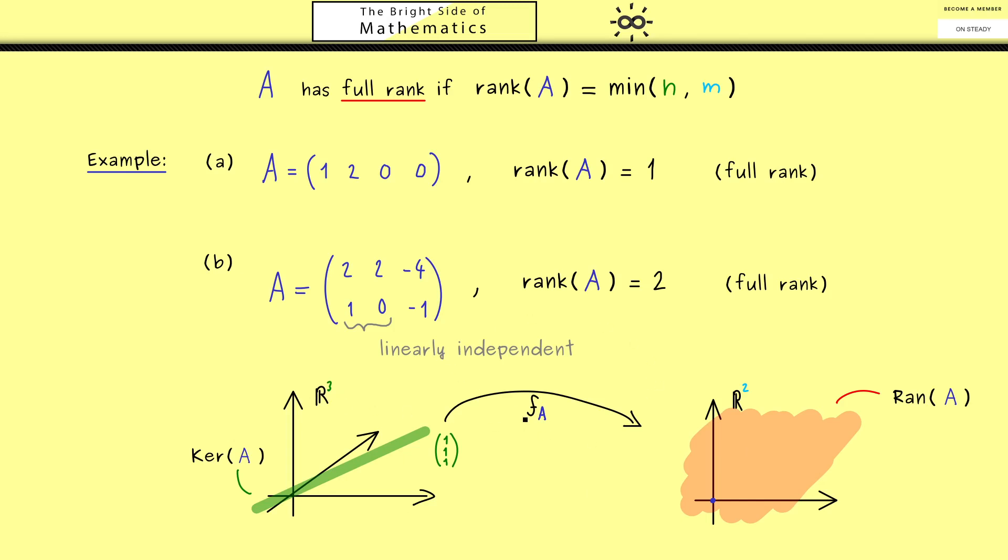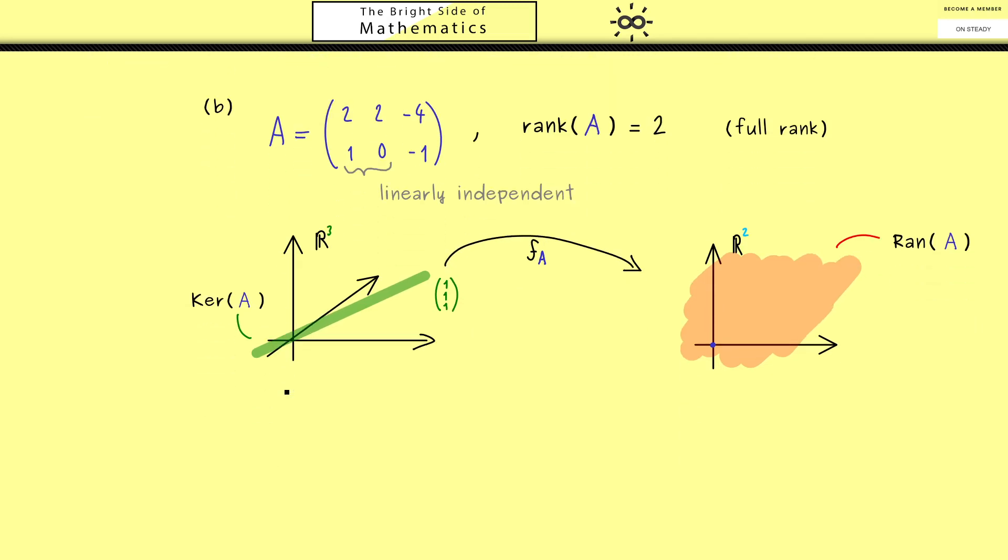Okay, with this we are now able to formulate the theorem. However, before we do that, maybe we first define the notion nullity as well. As you might have already guessed, this is just the name for the dimension on the left-hand side. In other words, the dimension of the kernel of the given matrix A. So you see, it's not complicated at all. It's called nullity because it's about the space that is sent to zero.